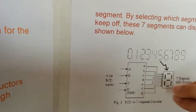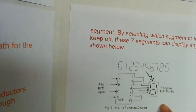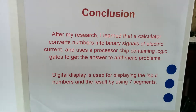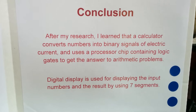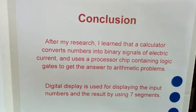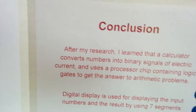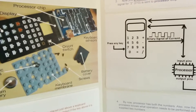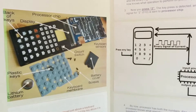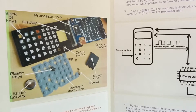And here's how it gets converted into a number. For my conclusion, after my research, I learned that a calculator converts numbers into binary signals of electric current, and uses a processor chip containing logic gates to get the answer to arithmetic problems. I also learned that a digital display is used for displaying the input numbers and the result by using seven segments. And you know how it does that very fast? Current is very fast, and current is the thing that's doing everything inside the calculator.